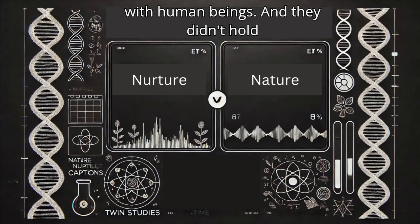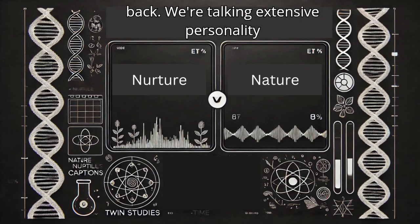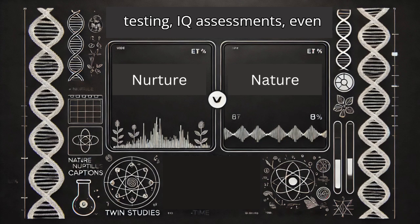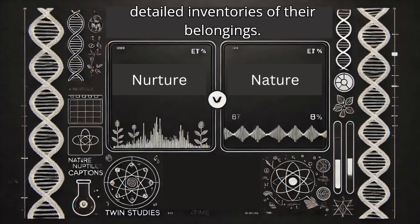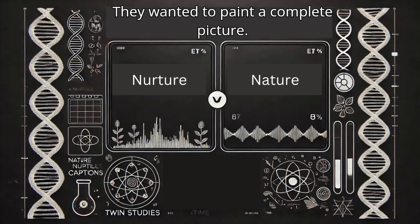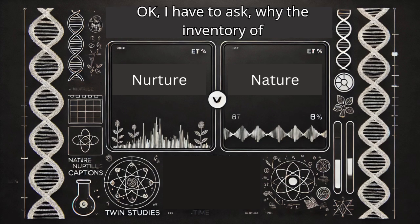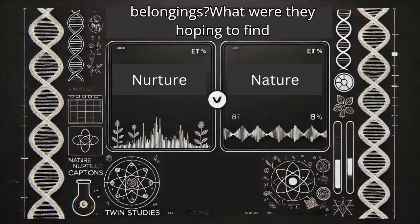With human beings. And they didn't hold back. We're talking extensive personality testing, IQ assessments, even detailed inventories of their belongings. They wanted to paint a complete picture. I have to ask, why the inventory of belongings? What were they hoping to find there?